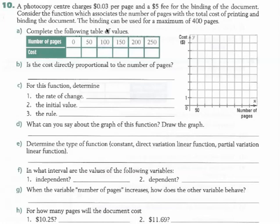So first A, complete the table of values, and I'm going to do that. If you are binding zero pages, you still have to pay for the binding of the document. If you walk in and say bind this up for me, but there's zero photocopies, they're going to have to charge you $5 for the binding.